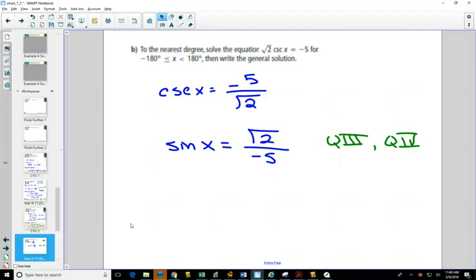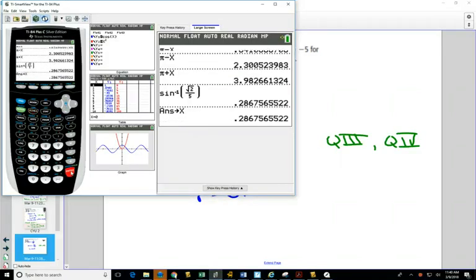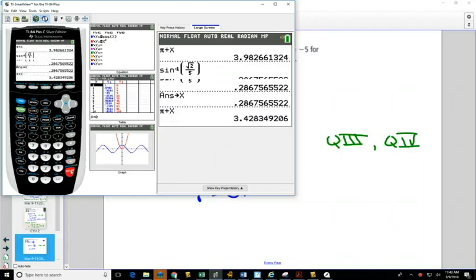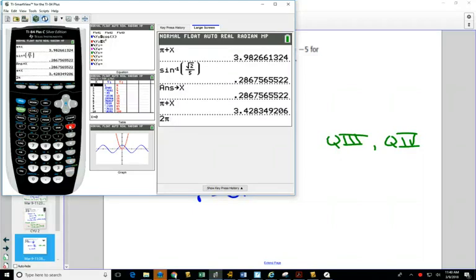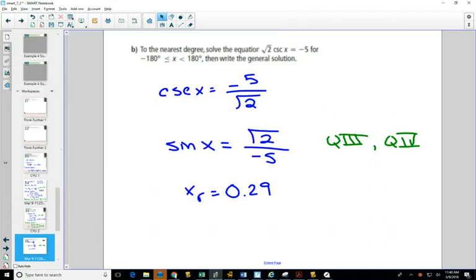For my work, I can say my reference angle is 0.29. I'm going to store that value as x. I need to find answers in quadrant 3 and quadrant 4. So in quadrant 3, it'll be π plus my reference angle. In quadrant 4, it would be 2π minus my reference angle. So I get 3.4243 and 5.996, which would be 6.00.